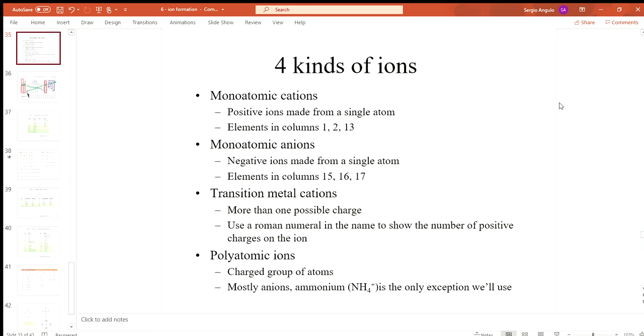The fourth type of ion are the polyatomic ions. Whereas the prefix mono means one, poly means many. So these are ions that are polyatomic—made up of many atoms. They're actually a charged group of atoms, so it's a group of atoms that is charged, not each individual atom.